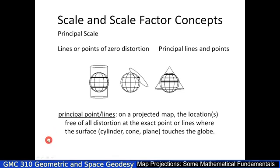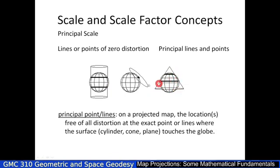One thing you need to remember very clearly is the lines and points of zero distortion. We call them principal points and lines. That's where either the cylinder, the plane, or the cone touches the sphere — and over there you will have zero distortion.